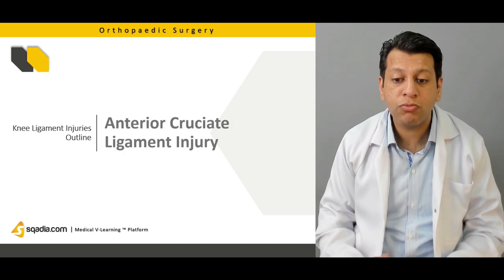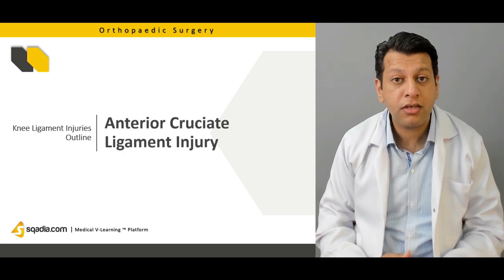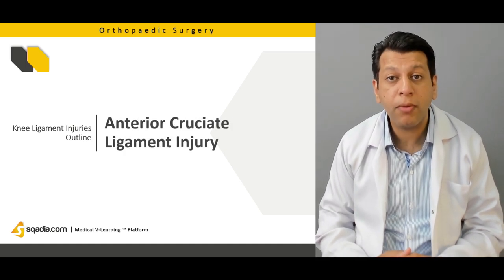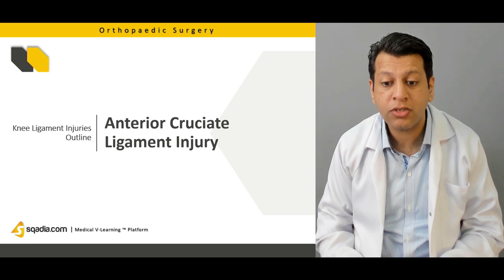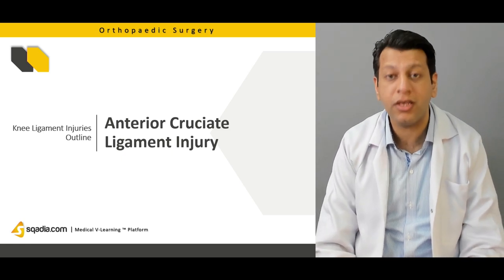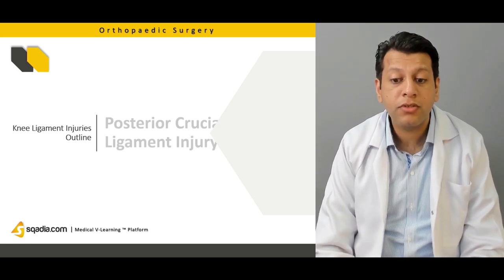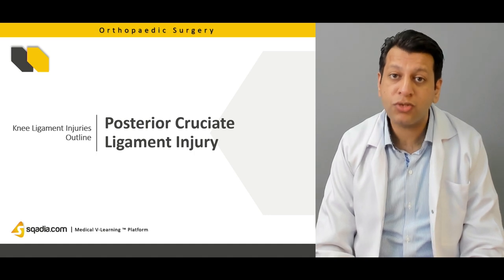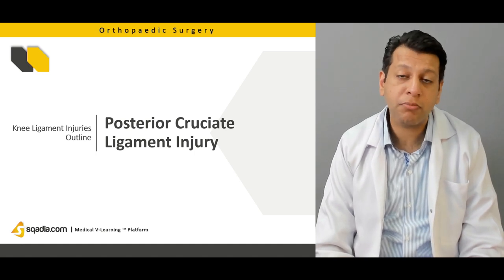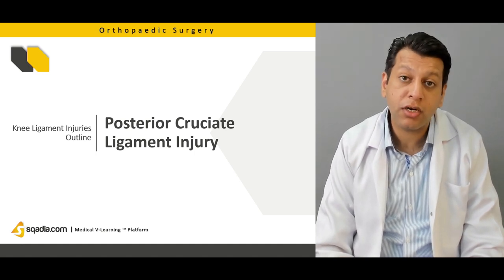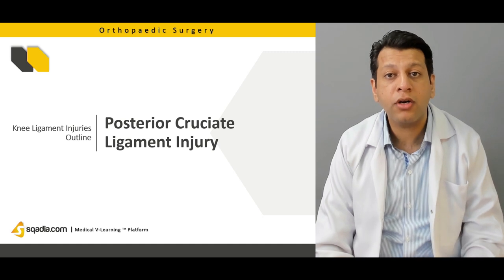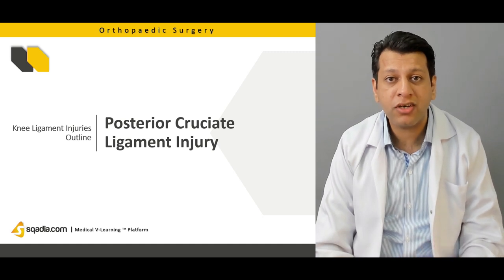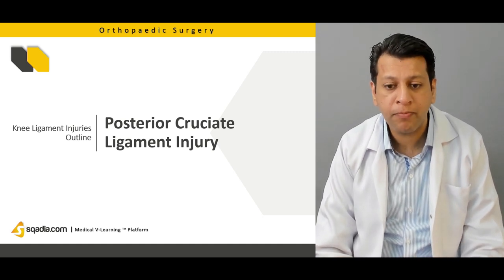We'll be going through the ACL — the first and most commonly injured intracapsular ligament — the anterior cruciate ligament. Then comes the PCL, which although less common than ACL injuries, is also one of the very pertinent and important components of intracapsular injuries in the knee.